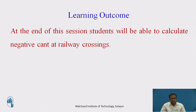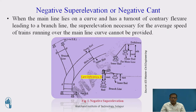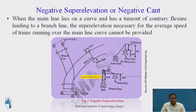The learning outcome of today's session: at the end of the session, students will be able to calculate the negative cant at railway crossings. In the earlier session, we discussed what is equilibrium cant, what is cant efficiency, and what is cant excess. Today we will see another type of cant — that is negative cant or negative super elevation.